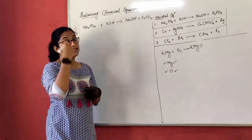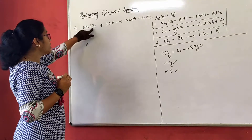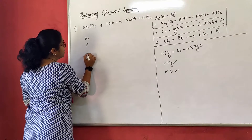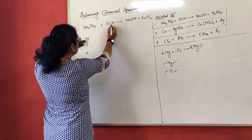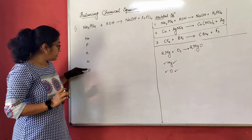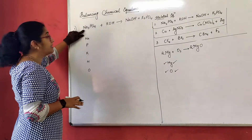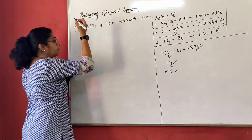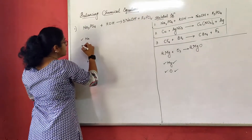We have to first identify the elements. What are the elements here? I have sodium, then phosphorus. I did not write oxygen immediately because oxygen is supposed to be written at the end. After that we have potassium, which is K. Oxygen and hydrogen come last. Now let's start checking. Sodium in the reactant side is 3. Sodium in the product side is 1. So I should make this 3 — I write coefficient 3 before NaOH. Balanced. Come to the next one: phosphorus is 1, phosphorus is 1 — balanced.